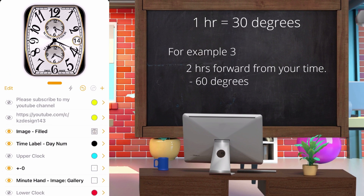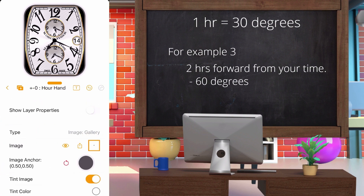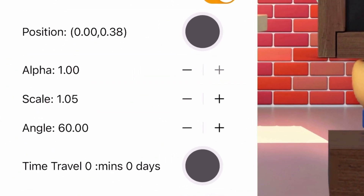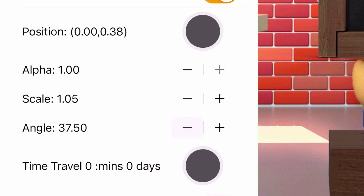In the case of an hour that is forward from your time, the angle is in minus degrees. For example, if you want the time two hours forward from your time, the angle will be set to minus 60 degrees.